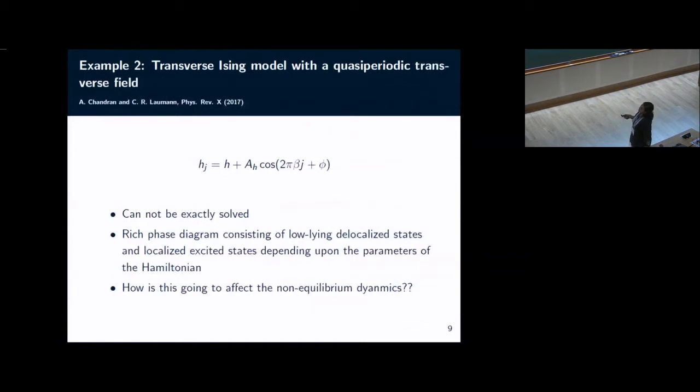The second example, which is actually what I wanted to speak about here but I couldn't complete the work, is basically the transverse Ising model where the transverse field has this spatial dependence. This cannot be exactly solved. In the Aubrey-Andre model there is self-duality at h equals j, so people could comment about the criticality. On the other hand, here it is not exactly solved, but at the same time the phase diagram of this model is much more rich.